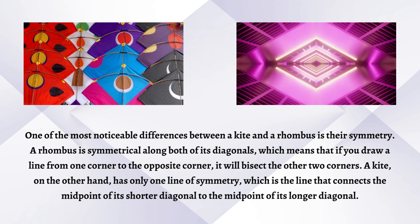One of the most noticeable differences between a kite and a rhombus is their symmetry. A rhombus is symmetrical along both of its diagonals, which means that if you draw a line from one corner to the opposite corner, it will bisect the other two corners.